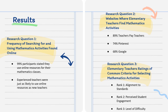In response to the second research question, which asked teachers where they searched for online elementary math activities, about 89 percent reported using Teachers Pay Teachers, 74 percent reported using Pinterest, and 68 percent used Google. Only about 28 percent of teachers with zero to 15 years of experience selected state-affiliated websites, compared to 43 percent of teachers with 16 or more years of experience. Teachers with zero to 15 years of experience used state-affiliated sites significantly less.